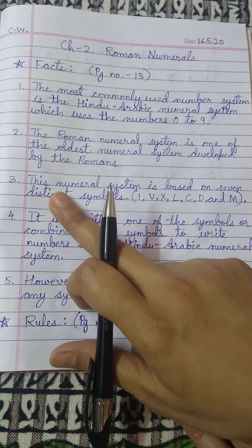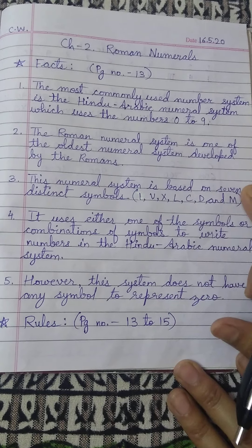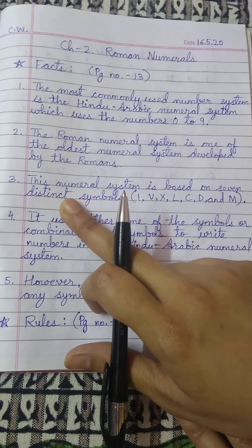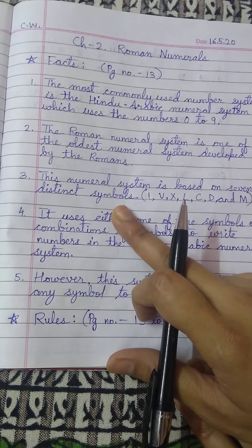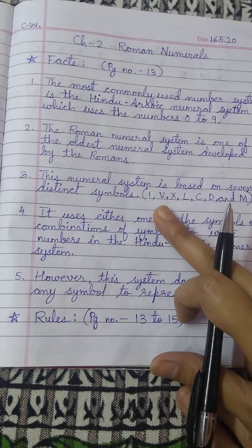Third fact is this numeral system, that means this roman numeral system, is based on 7 distinct symbols. Distinct means different symbols and what are the symbols? The symbols are from the alphabets, letters. What are the letters?